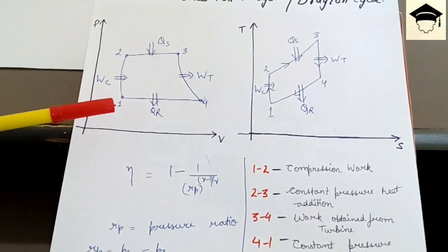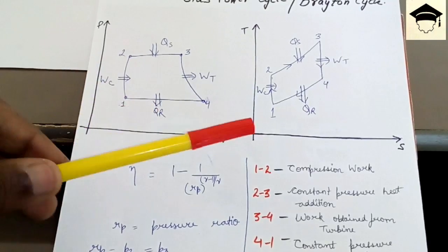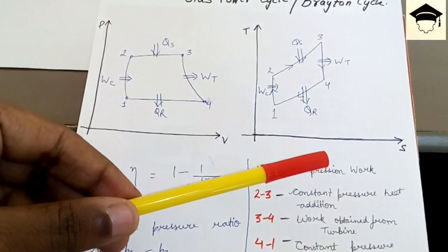So the basic cycle represents on PV diagram is from one to just like this and on TS diagram correspondingly it is like this.